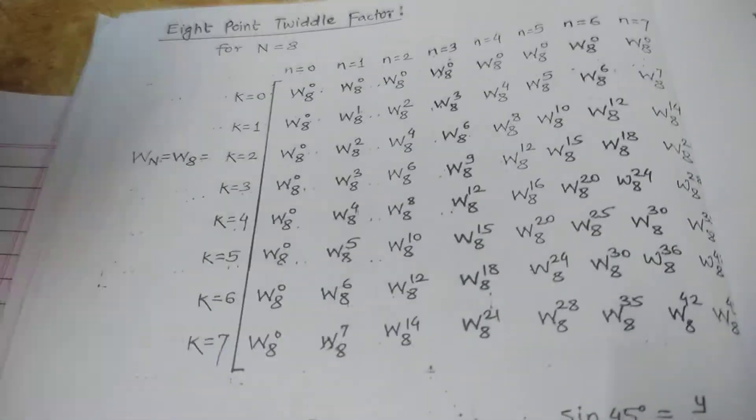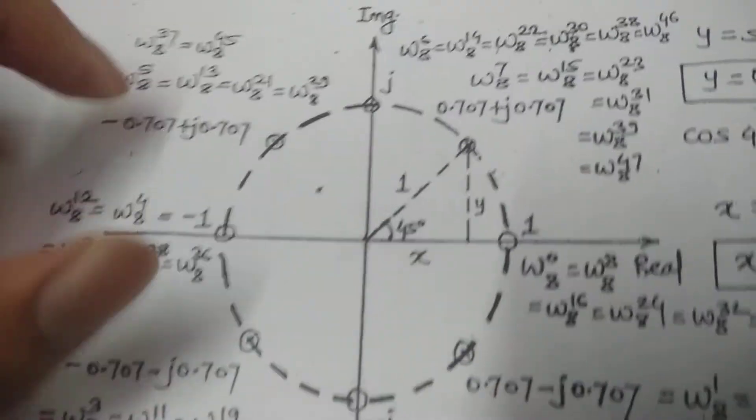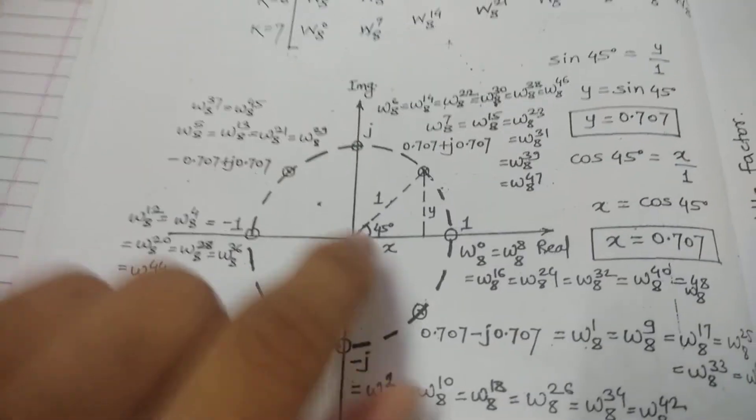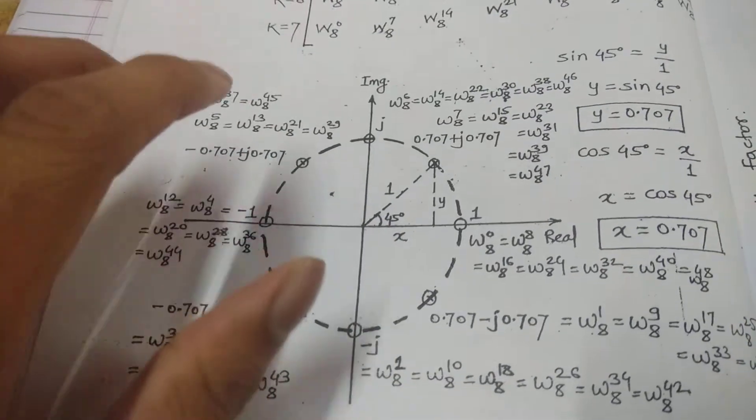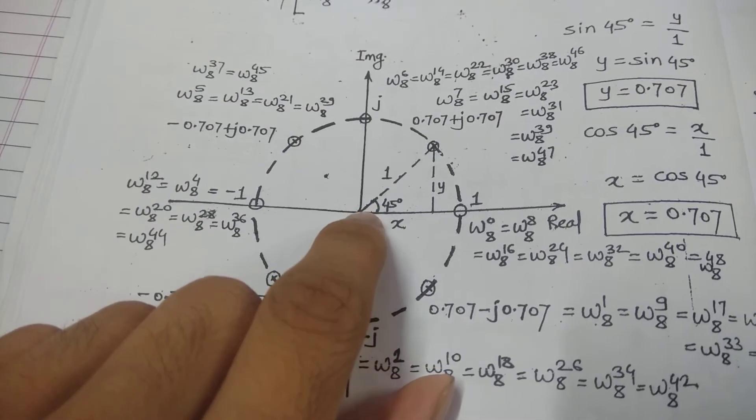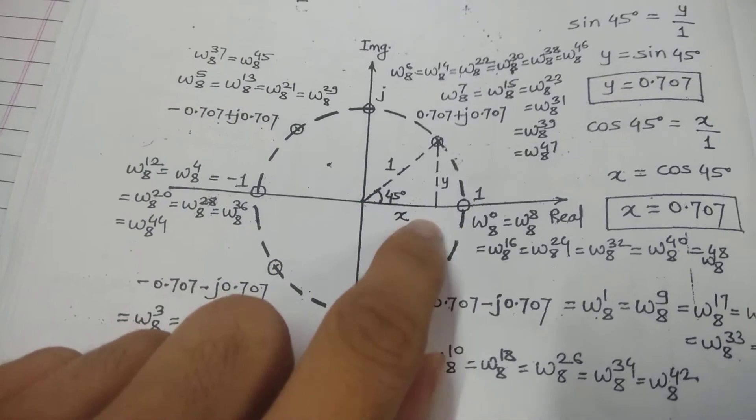After having this matrix, the next step is to draw a circle. In this circle you will divide a unit circle into 8 equal parts. How to do this? Take angle 45 degrees.